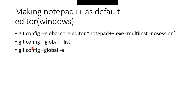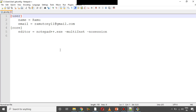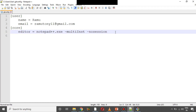Now we are checking if the default editor in Notepad++ is working. We will run git config global and test that Notepad++ opens. We are going to create a config with git config space global and then press Enter. Notepad++ should open as the default editor.